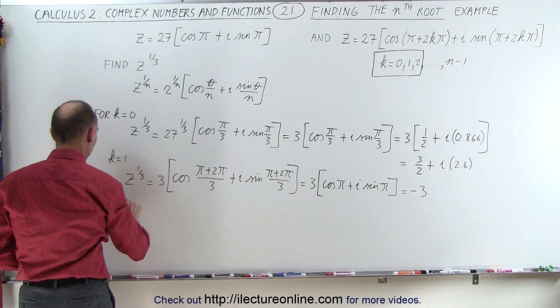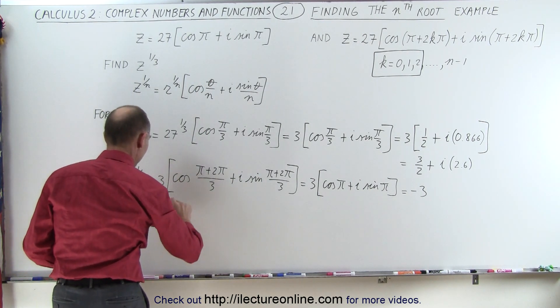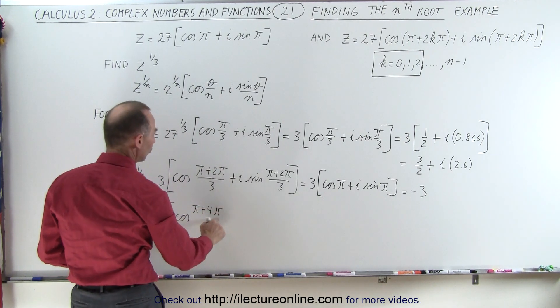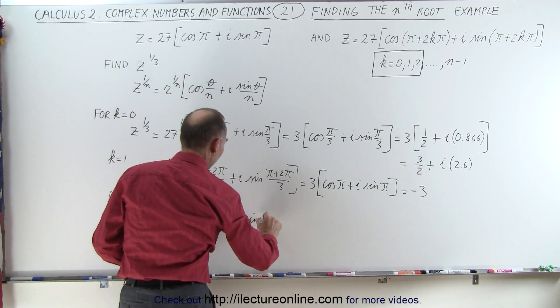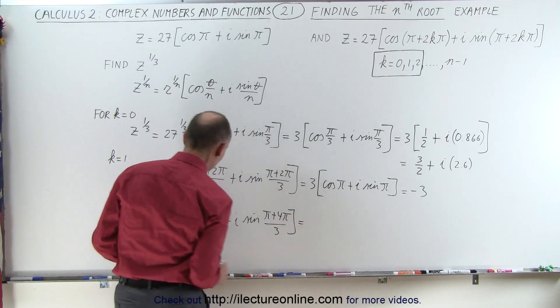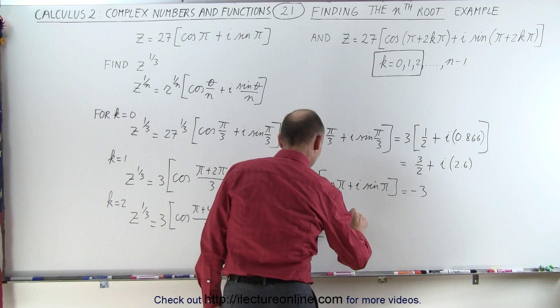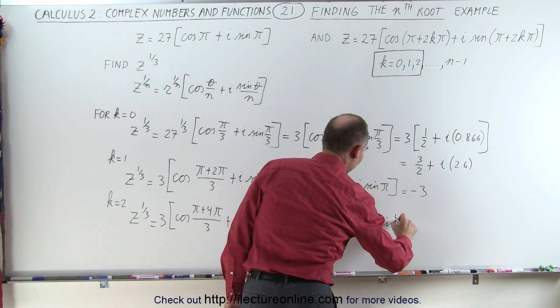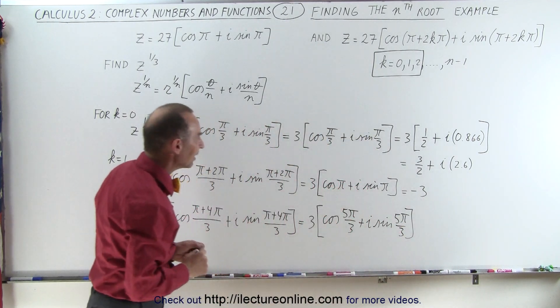And for k equals 2, we have z to the 1/3 power is equal to 3 times the cosine of π plus 4π, because it's 2π times k, divided by 3, plus i times the sine of π plus 4π, divided by 3, which can be simplified to 3 times the cosine of 5π over 3 plus i times the sine of 5π over 3. Of course we can simplify that, but we'll just go ahead and leave it in that form.